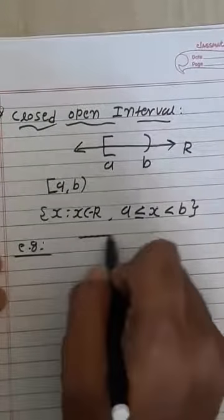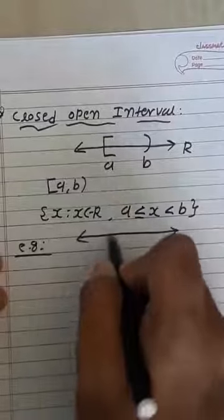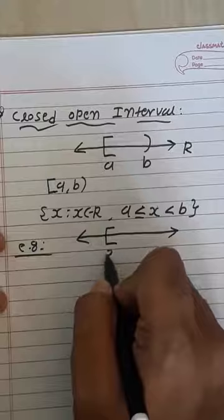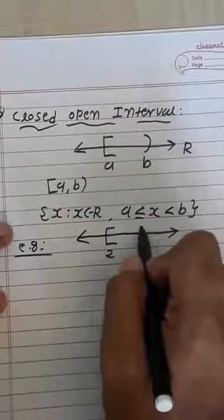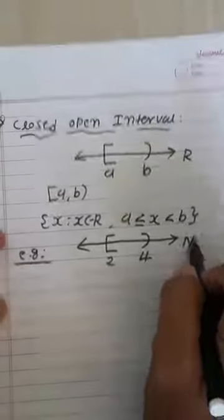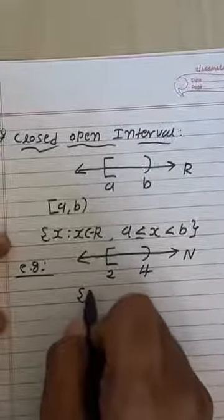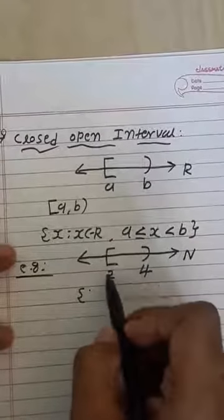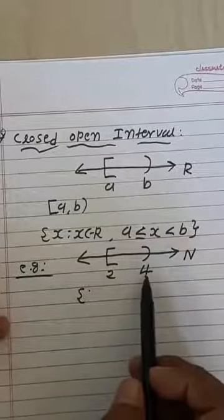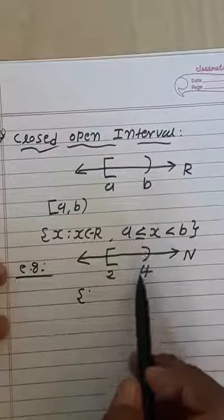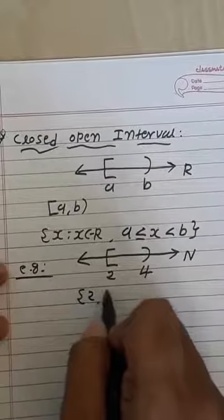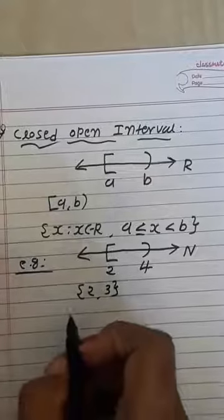Let us take one example on number line N. Consider closed interval 2 and open interval 4, written as [2, 4). Since position of 2 is closed form, we include 2. Since 4 is in open form, we cannot include 4. So the answer is the set {2, 3}.